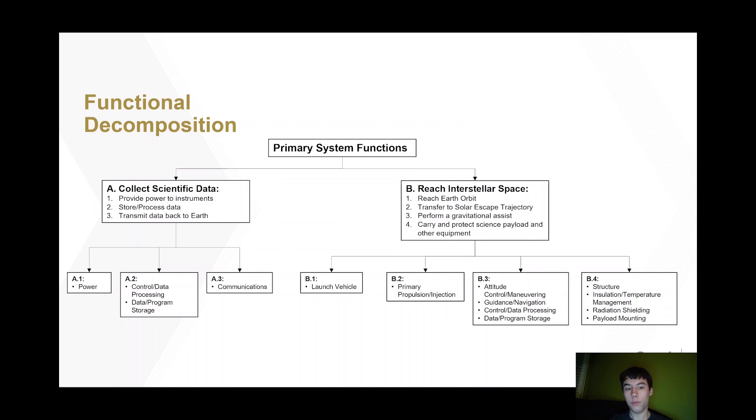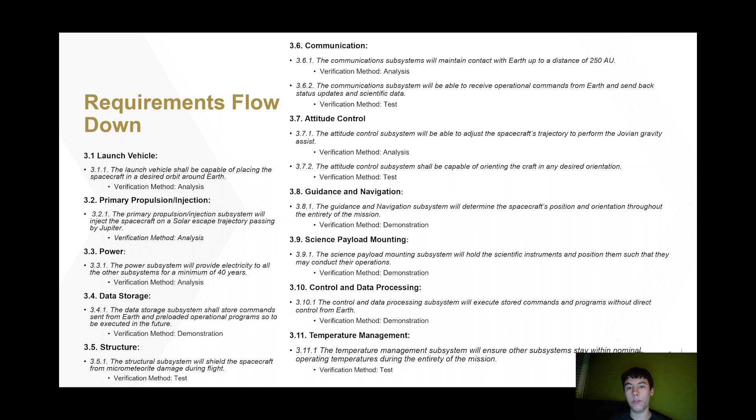From these functions, we were able to determine what subsystems we would need and what functions they would perform. For example, the communications subsystem, A3, is responsible for transmitting the data back to Earth. The next step was to take these intended functions and combine them with the overall system requirements to determine our specific subsystem requirements. For example, we can elaborate on the communications system function of transmitting data back to Earth by specifying that it needs to be able to do this up to a distance of 250 AU, which comes from the overall system requirements.